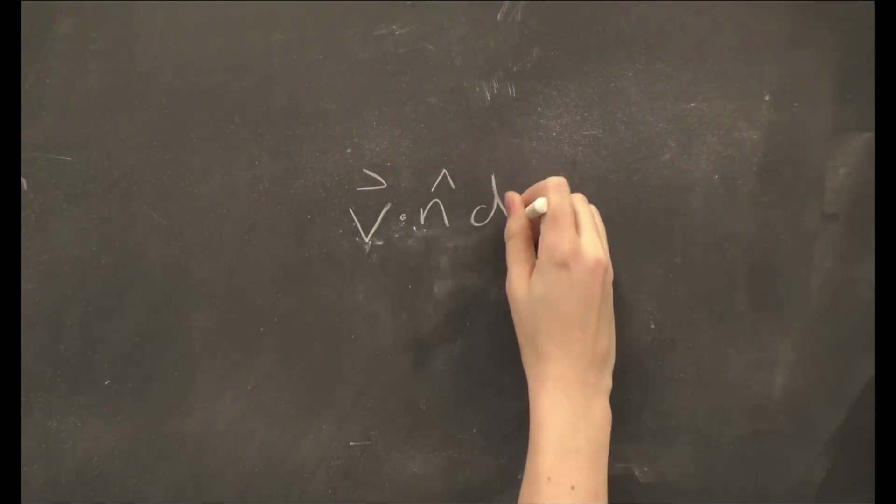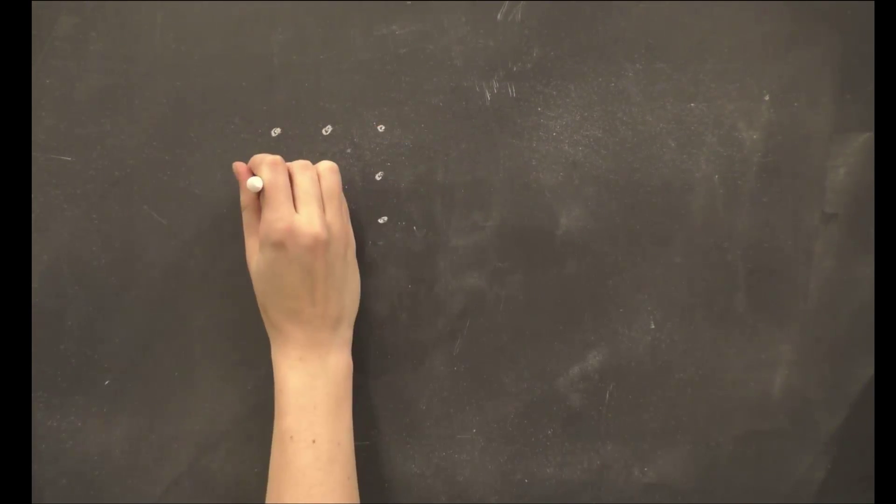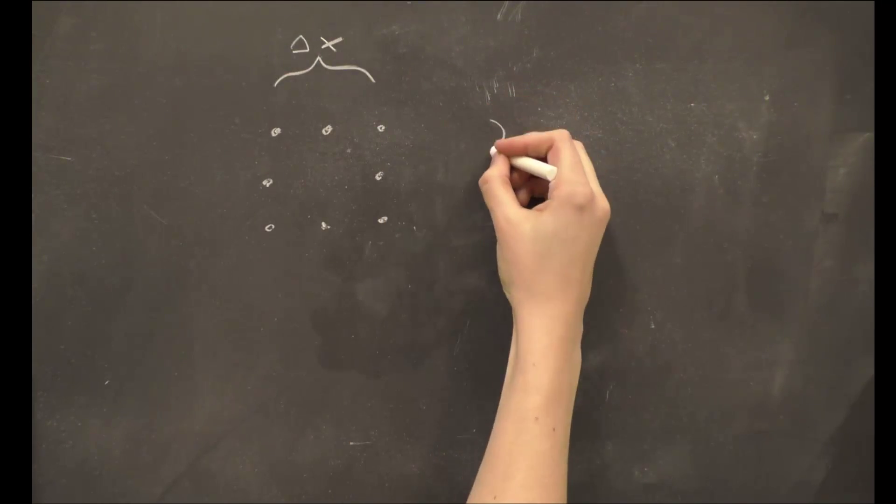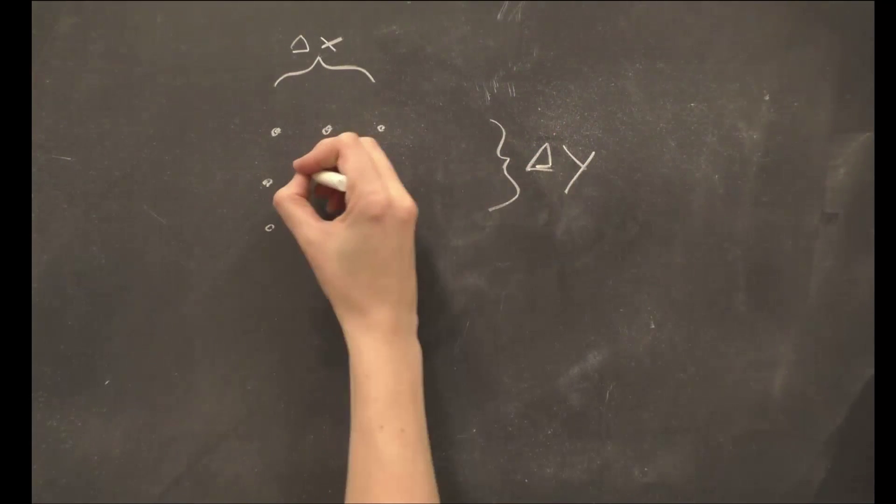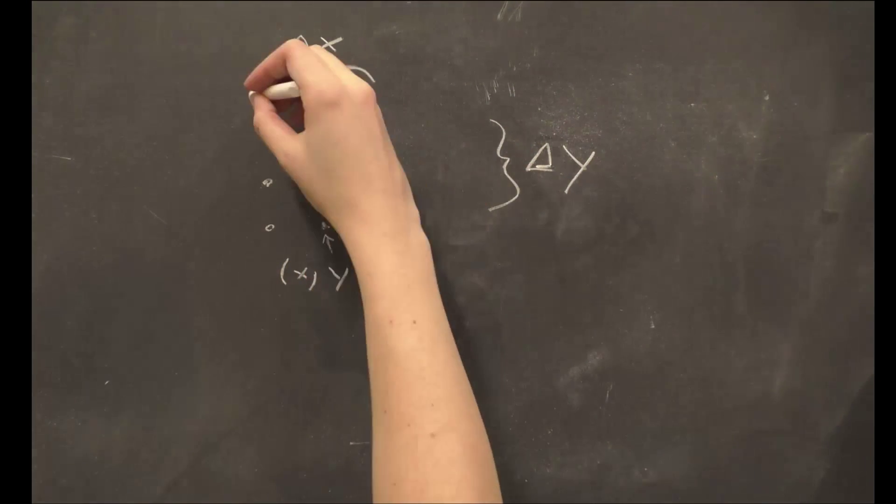Now we will examine the integrand V dot n-hat dA. Say we have a square of points, each with some velocity. The sides of our square we will label delta x delta y, and the center point is xy. N-hat for each side is perpendicular to that side.